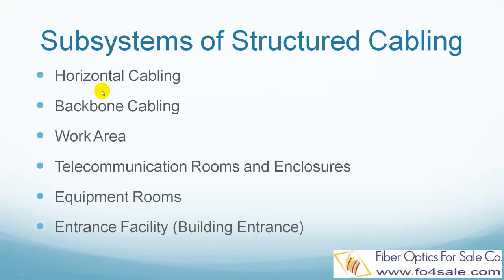The TIA 568C breaks Structured Cabling Systems into six areas: one is Horizontal Cabling, two is Backbone Cabling, three is the Work Area, four is Telecommunication Rooms and Enclosures, five is Equipment Rooms, and six is Entrance Facility, or Building Entrance.